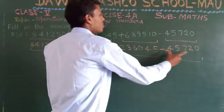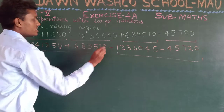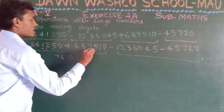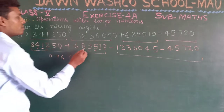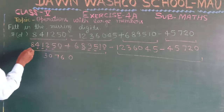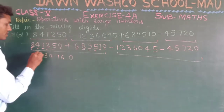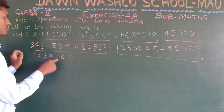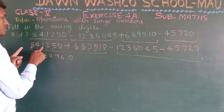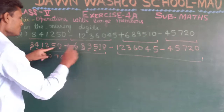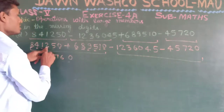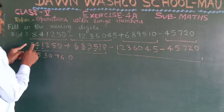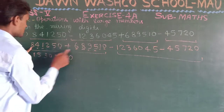Now let us add the two positive numbers. Zero and zero is 0. Five and one gives 6. Two and five gives 7. One and nine is ten — write 0 carry 1. Carry one and four gives five, five and eight gives thirteen — write 3 carry 1. One and eight is nine, nine and six is fifteen — write 5 carry 1. So the sum of the two positive numbers is obtained.